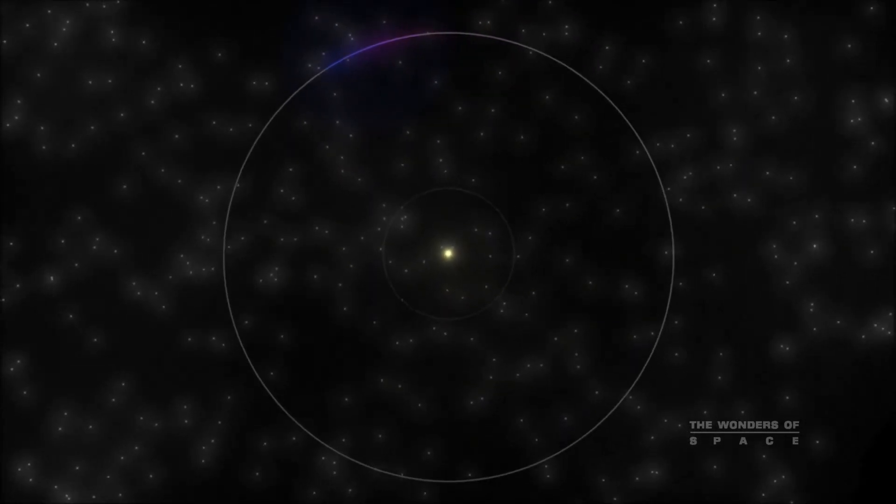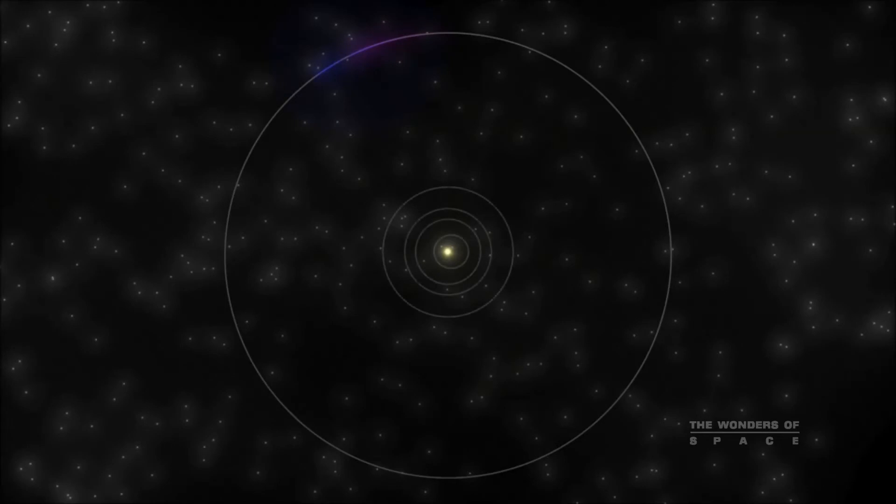Notice the large separation between the orbits of Jupiter and Mars. This is the realm of the asteroid belt. It is the debris of a planet that failed to form because of Jupiter's gravitational influence.